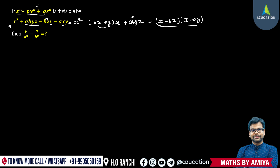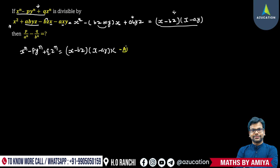Now since this expression has the factor, we could say Xⁿ minus pYⁿ plus qZⁿ is actually written as the factor (X minus bz)(X minus ay) into k, because our term could be the factor into some value. Now, say this expression is A.